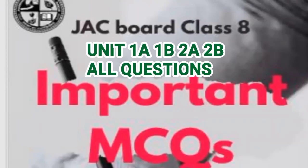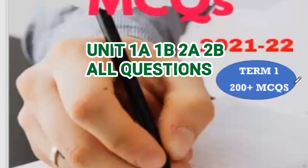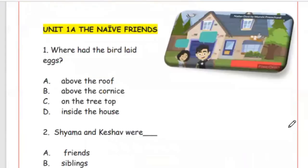Hello Class 8 Learners, welcome to Rapid MCQ Sessions of Jackboard Class 8 English Term 1. Let us begin with Unit 1, The Naive Friends. Question 1: Where had the bird laid eggs? Options: above the roof, above the corners, on the treetop, inside the house. The right answer is Option B, above the corners.